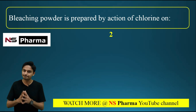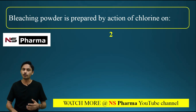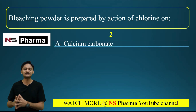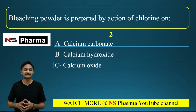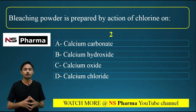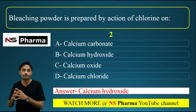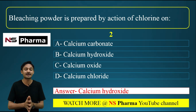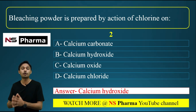Question number 2: How is bleaching powder prepared? Bleaching powder is prepared by the action of chlorine on — options are: A) calcium carbonate, B) calcium hydroxide, C) calcium oxide, D) calcium chloride. The correct answer is option B, that is calcium hydroxide.